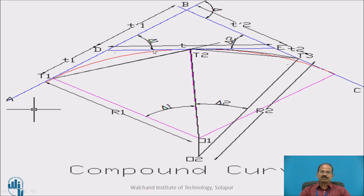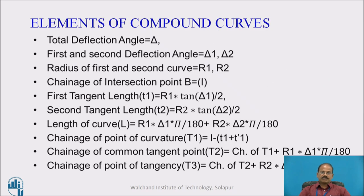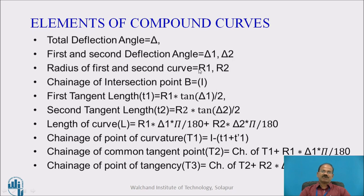There is a special element in the form of alignment D, which is nothing but the common tangent, tangential to both curves at the common tangent point T2 as indicated here. The elements discussed include: total deflection angle delta, which is the same as that of a simple circular curve; first and second deflection angles delta 1 and delta 2; and radii of the first and second curves R1 and R2 respectively.